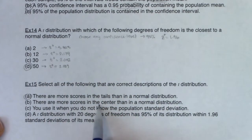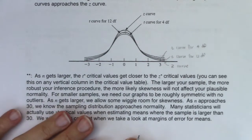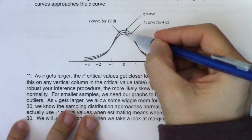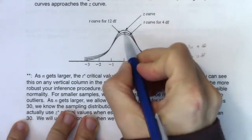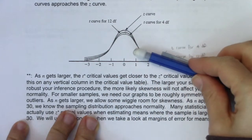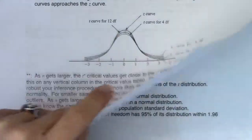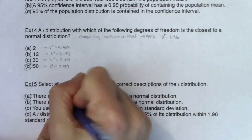Second: there are more scores in the center than in a normal distribution. So are there more scores in the center? No — because those Y values are lower. There are actually fewer scores in the center because the tails have more scores, the center has fewer scores. But as degrees of freedom increase, your tails get shorter and your centers get taller. But the way this particular sentence is written, it's false — there are not more scores in the center. There are fewer.